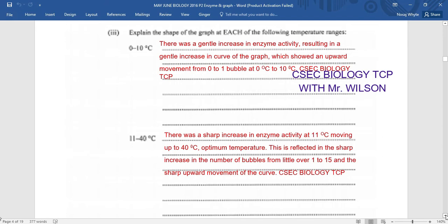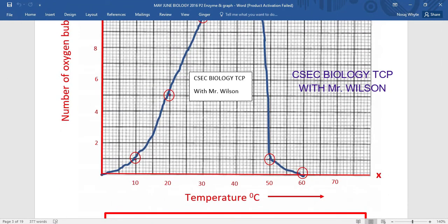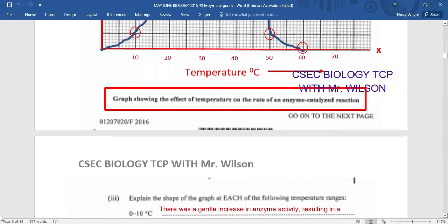Let us look at 11 to 40 degrees Celsius. There was a sharp increase in enzyme activity at 11 degrees Celsius moving up to 40 degrees Celsius. And of course, at 40 degrees Celsius, you would have seen that we had the optimum temperature. This is reflected in the sharp increase in the number of bubbles from a little over 1 to 15 and the sharp upward movement of the curve. Let us look at the sharp upward movement that looks at 11 to 40. So 11 to 40 would start somewhere here, the first blue line here, and it will move on up to optimum. So you are seeing the sharp increase here. The first 10 minutes, we had just 1 or less than 1 bubble. And when we reached up to 10 minutes, there was 1 bubble. But for the second 10 minutes, if you observe here, it increased by 4 to actually 5.